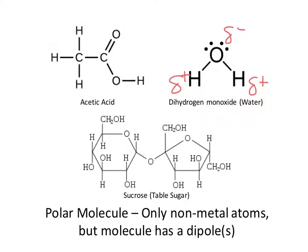Table sugar is another polar molecule — look at all the O-H bonds, which are all polar bonds, and there are many of them. You can also check polarity by asking: does one side of the central atom look like the other side? For sugar, the answer is no, so there is a slight electron shift from one side to the other. When in doubt, use VSEPR rules to determine whether a molecule is polar.